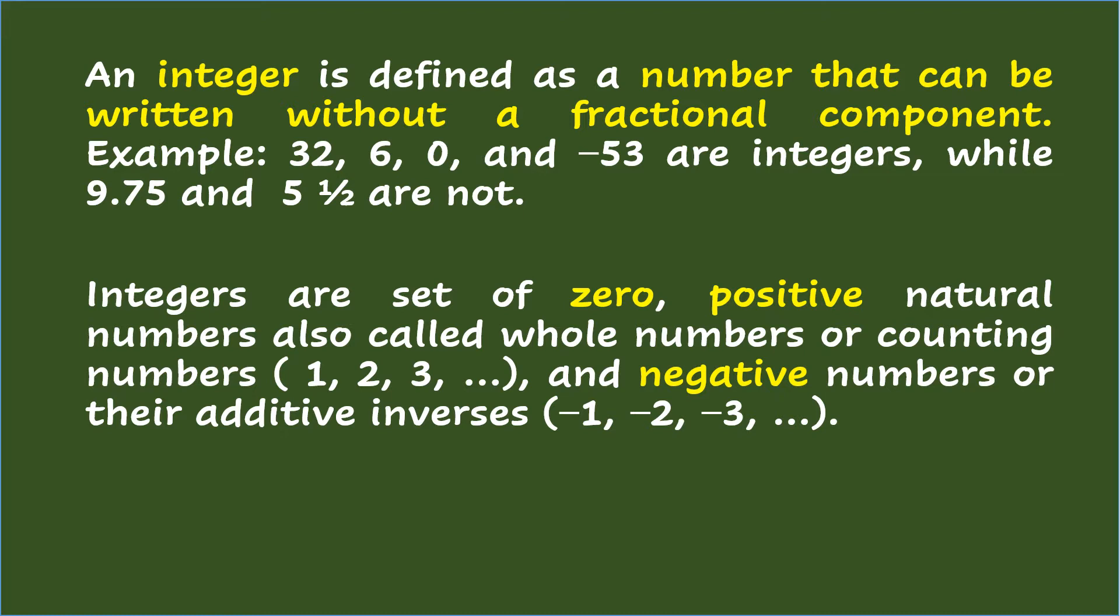Integers are set of zero, positive natural numbers also called whole numbers or counting numbers (1, 2, 3, and so on), and negative numbers or their additive inverses (negative 1, negative 2, negative 3, and so on).